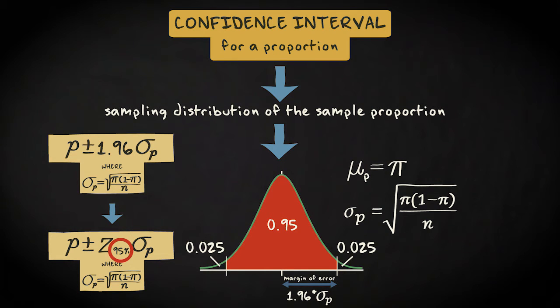However, as you might have noticed, we don't know the value of population proportion pi. So it is impossible to compute the standard deviation of the sampling distribution of the sample proportion. We therefore substitute the population parameter, pi, with an estimate, and this estimate is our sample statistic, p.